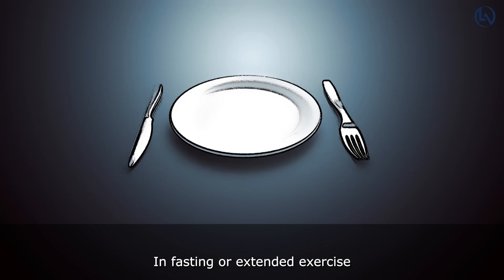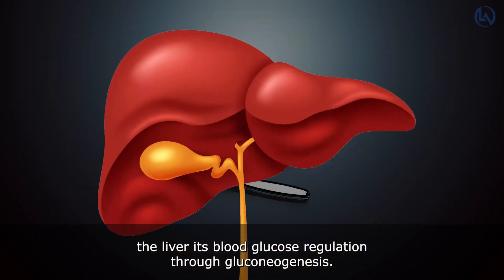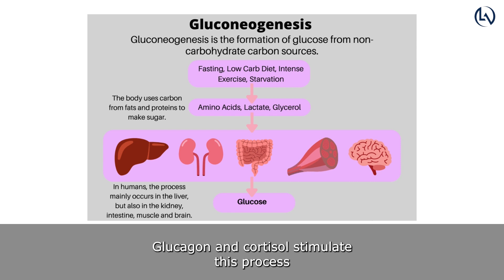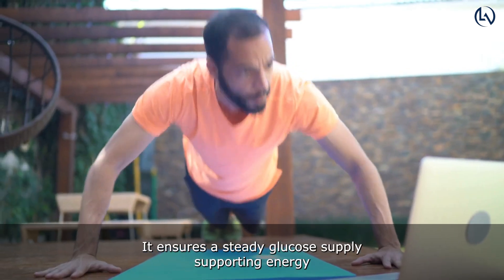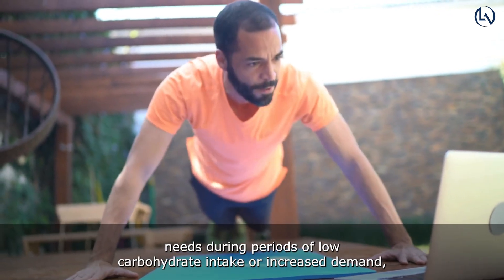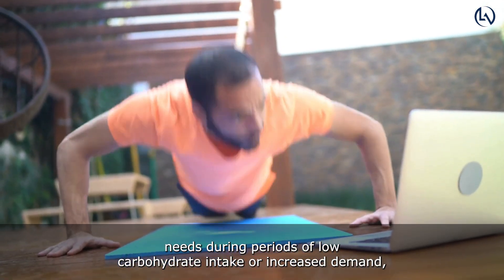Gluconeogenesis: In fasting or extended exercise, the liver aids blood glucose regulation through gluconeogenesis. Glucagon and cortisol stimulate this process, using amino acids, lactate, and glycerol to synthesize glucose. It ensures a steady glucose supply, supporting energy needs during periods of low carbohydrate intake or increased demand.